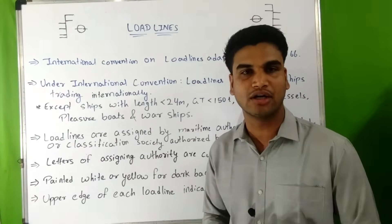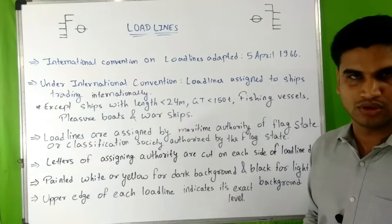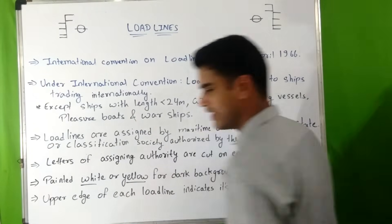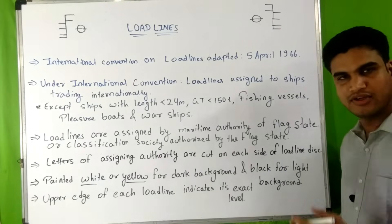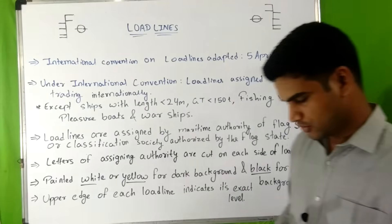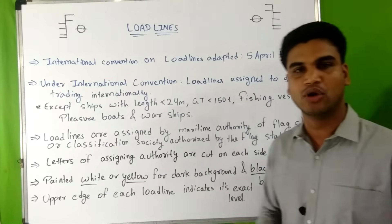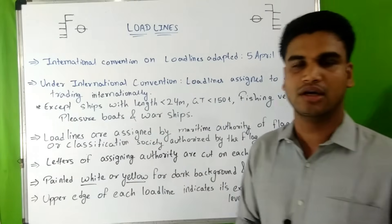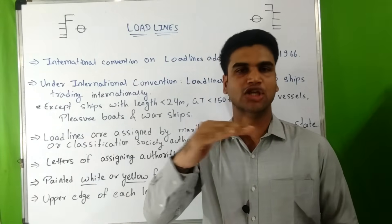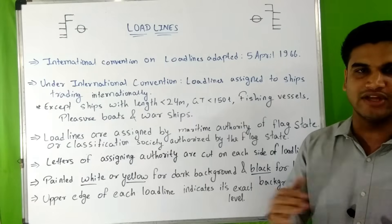Load line marks are marked on the sides of the ship — on the hull at midship. If the hull is painted dark, the markings are painted white or yellow; if the hull is painted light, the markings are painted black. One important point: the upper edges of each load line indicate its exact level. The load line markings are 25 mm thick, so the top edge of that marking gives the exact level.